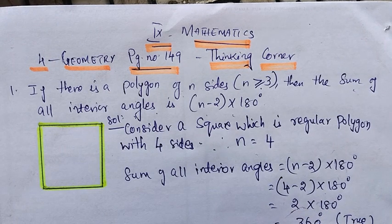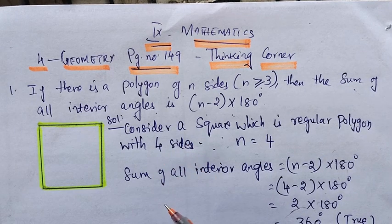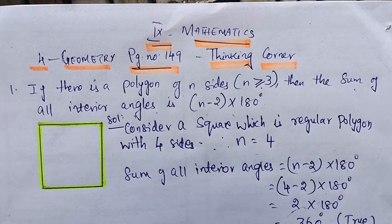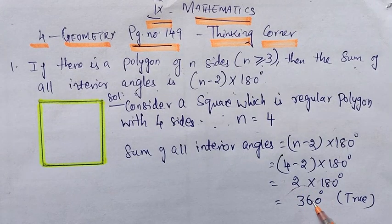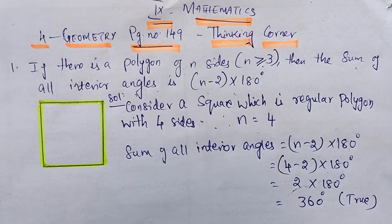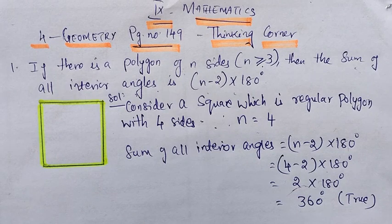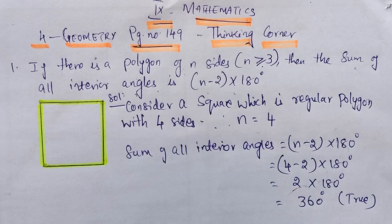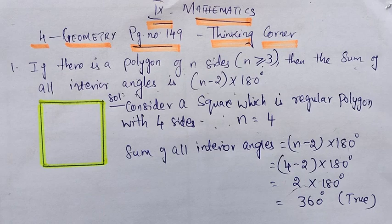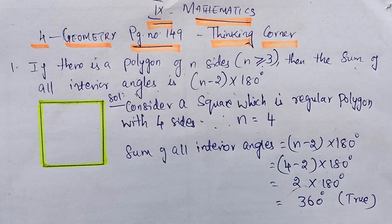Which is true. That is, a square is a regular polygon. The sum of all interior angles satisfies the formula (n minus 2) into 180 degrees. A square has 4 sides, so 4 minus 2 into 180 degrees equals 2 into 180 degrees equals 360 degrees. Which is true. Square is a regular polygon with 4 sides and the sum of interior angles satisfies the condition (n minus 2) into 180 degrees.